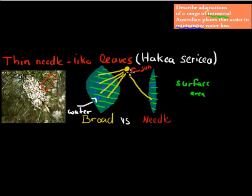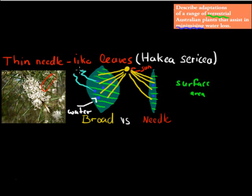The sun's rays come onto both leaves, and evaporation or transpiration happens. In the broad leaf I have five water droplets evaporating, whereas I only have two water droplets evaporating on the needle-like leaf. There is generally a lot less evaporation happening on a needle-like leaf compared to a broad leaf, because it has a lot less surface area exposed to the sun.